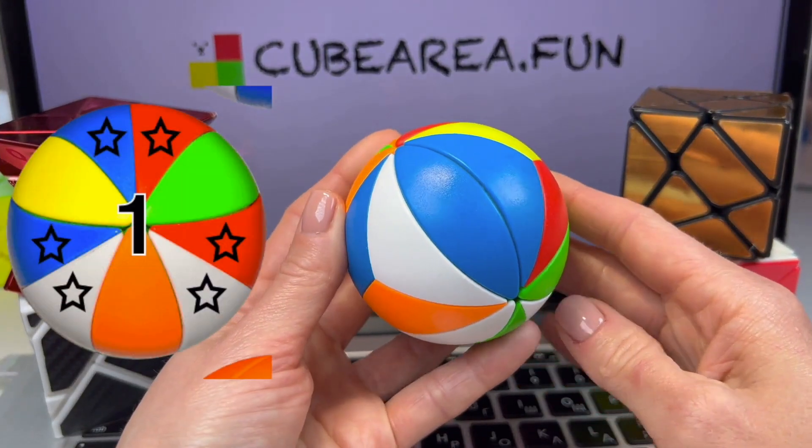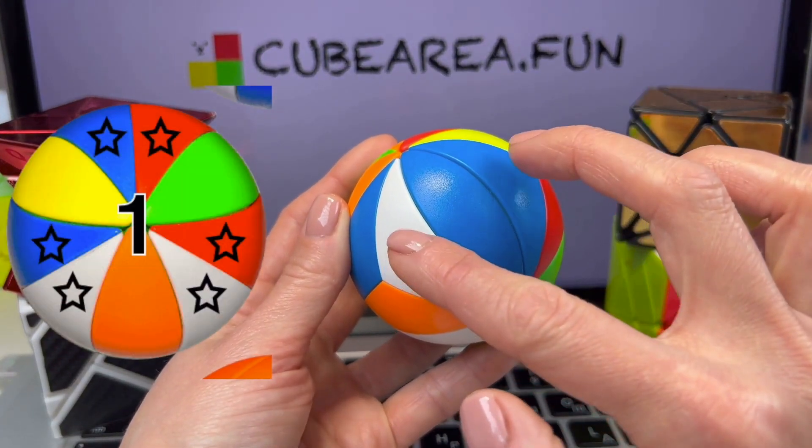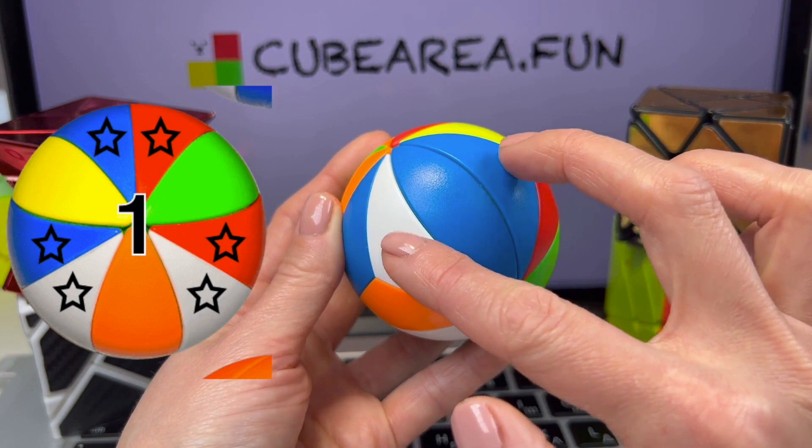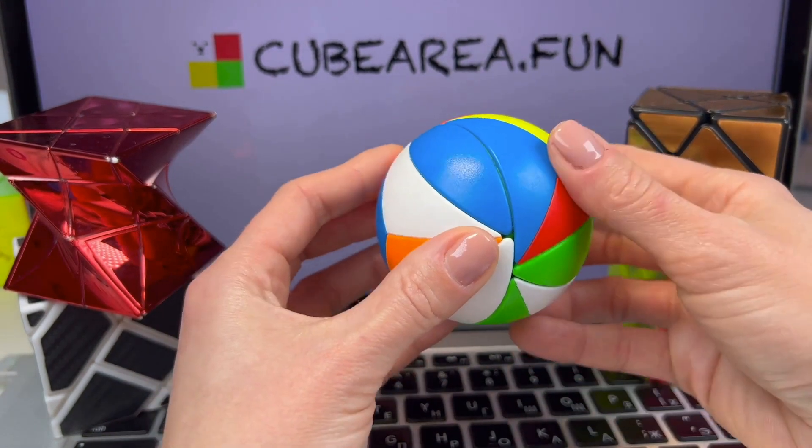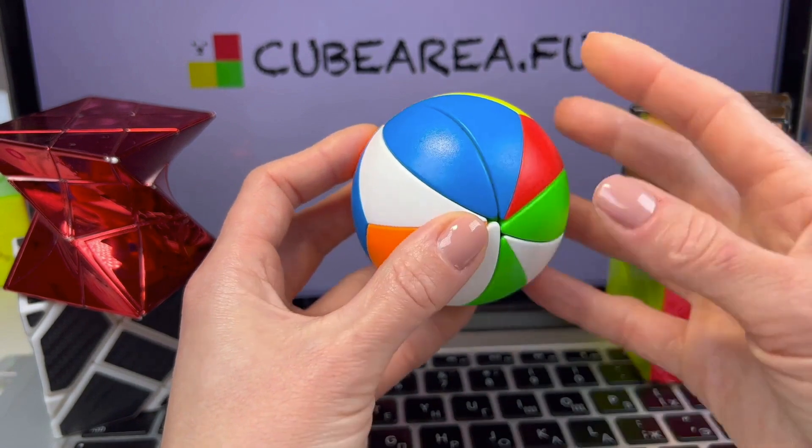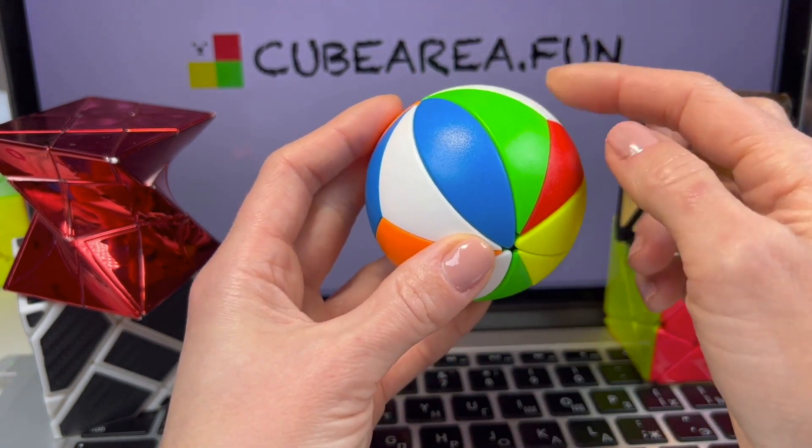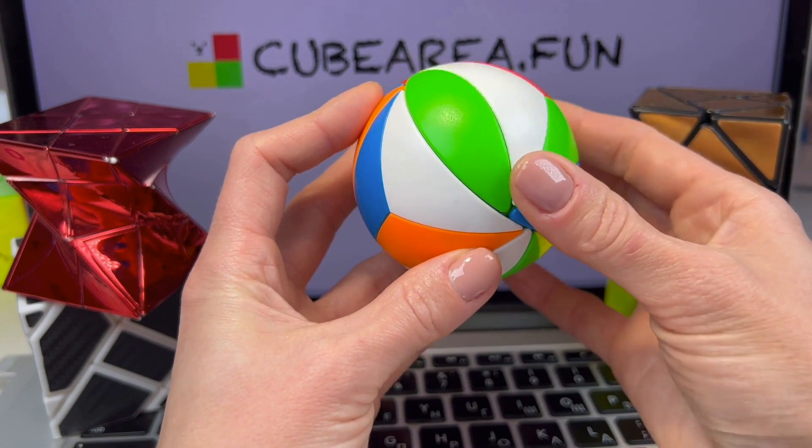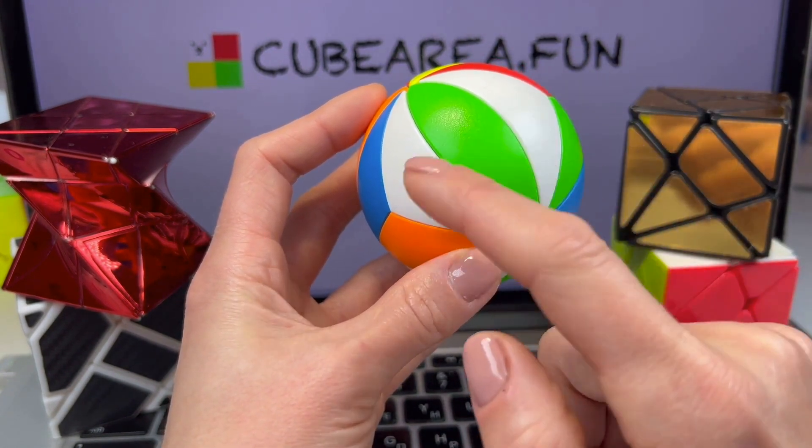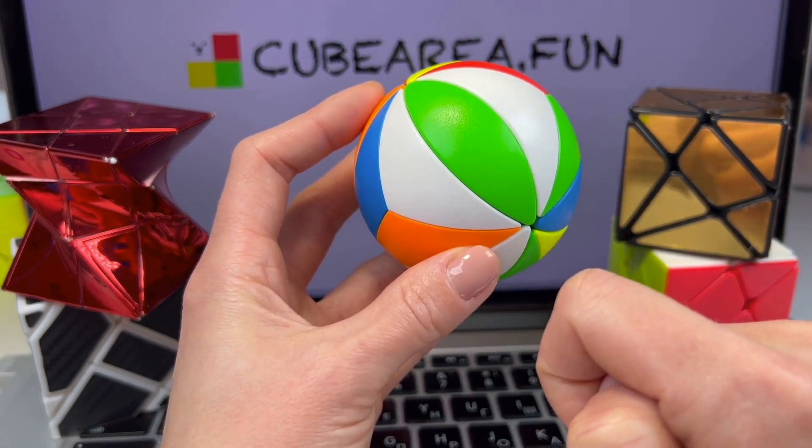In the first step, we will assemble the triangular elements of the white side, blue, and red. I'll start with the white one. Let's look for the second triangular part. Here it is for this side. There are no special algorithms here. We just rotate the puzzle. The first connection of the white triangles. We have completed it.